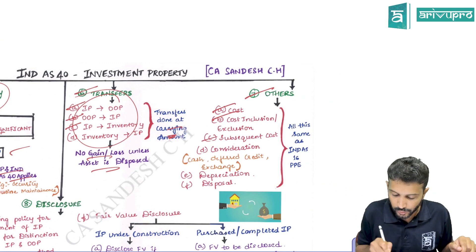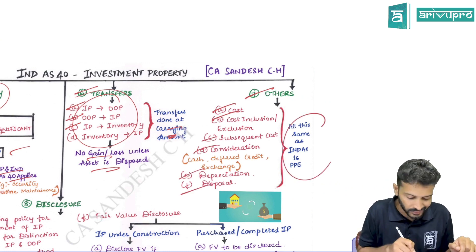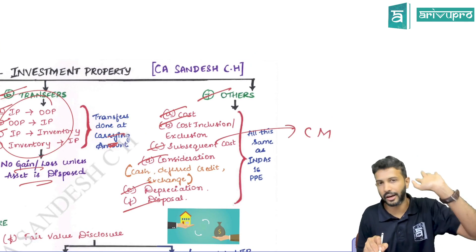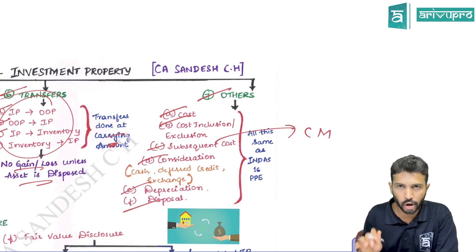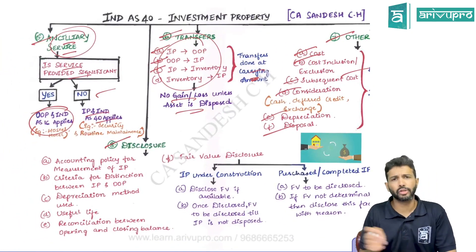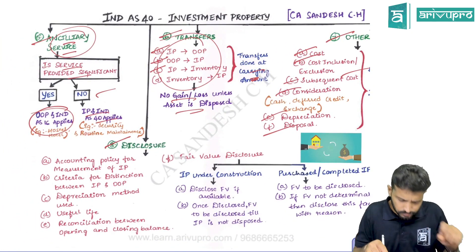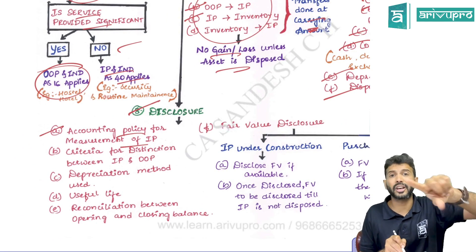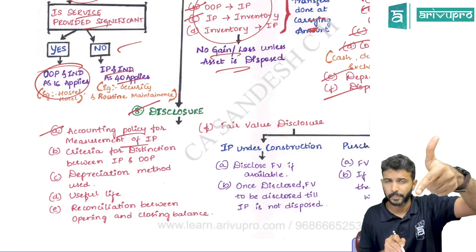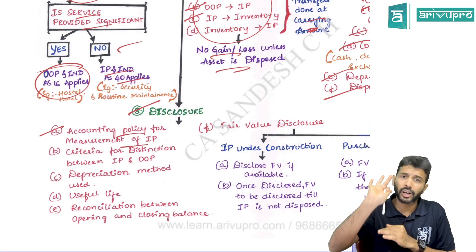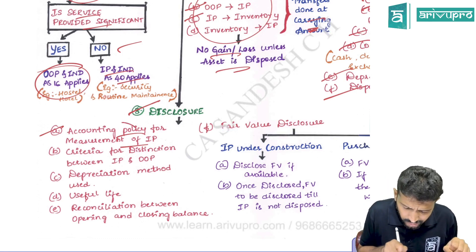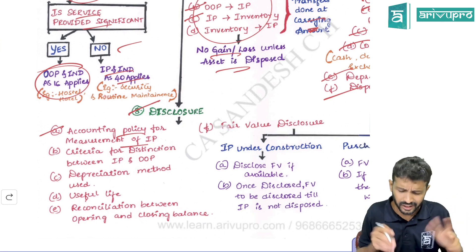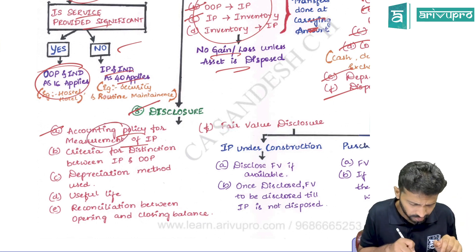Cost inclusion, exclusions, subsequent cost consideration, depreciation, and disposal are all the same as per Ind AS 16. But for subsequent measurement of investment property, you can only go for the cost model — the revaluation model is not permitted. Note that IFRS allows both cost model and revaluation model, but Ind AS 40 allows only the cost model, and we have to follow Ind AS.